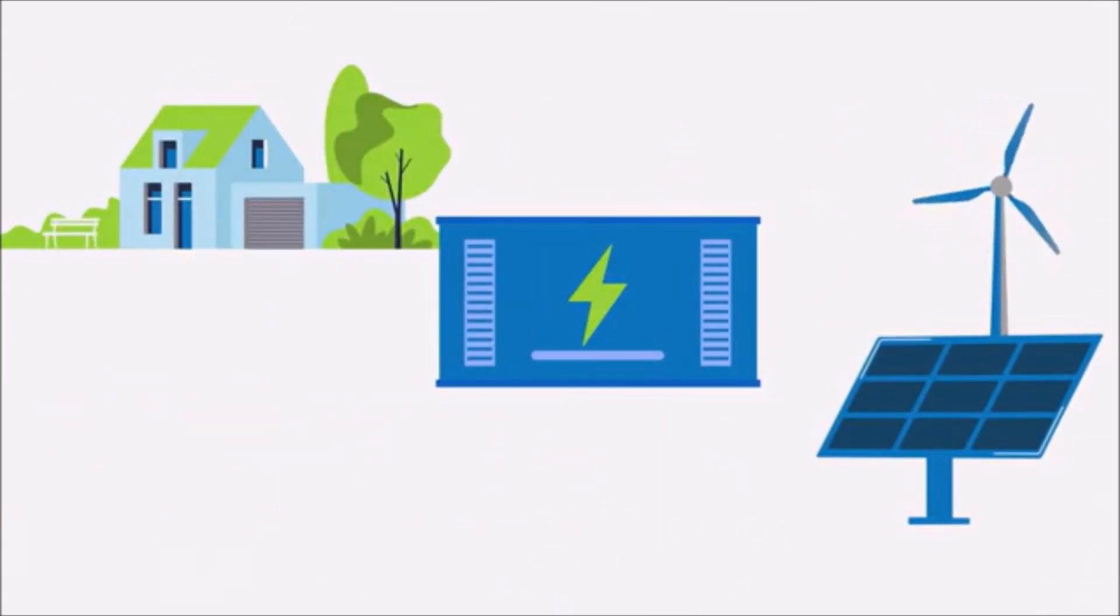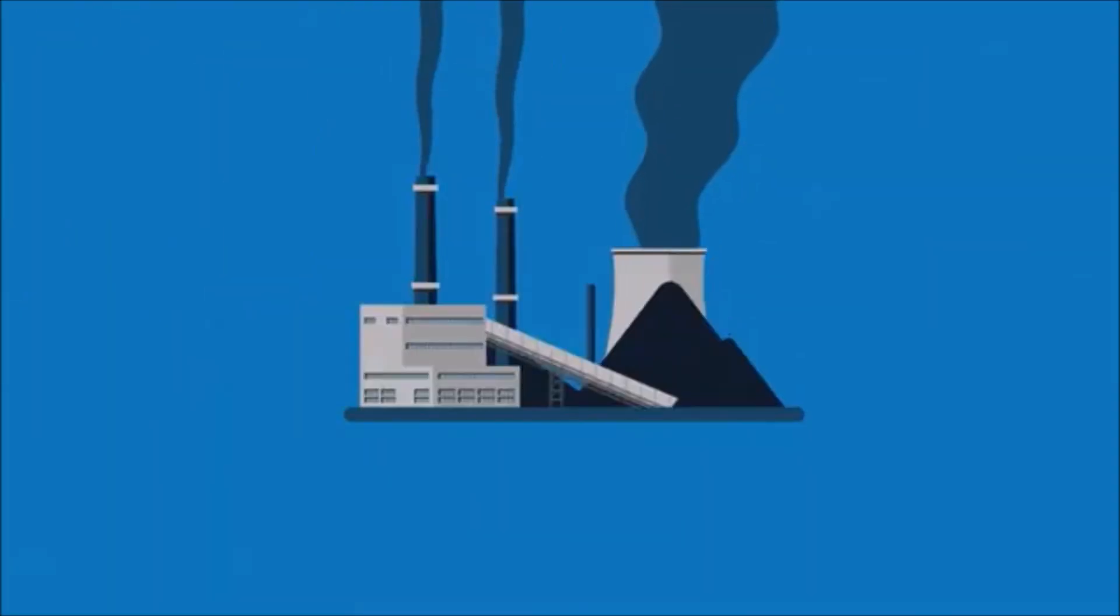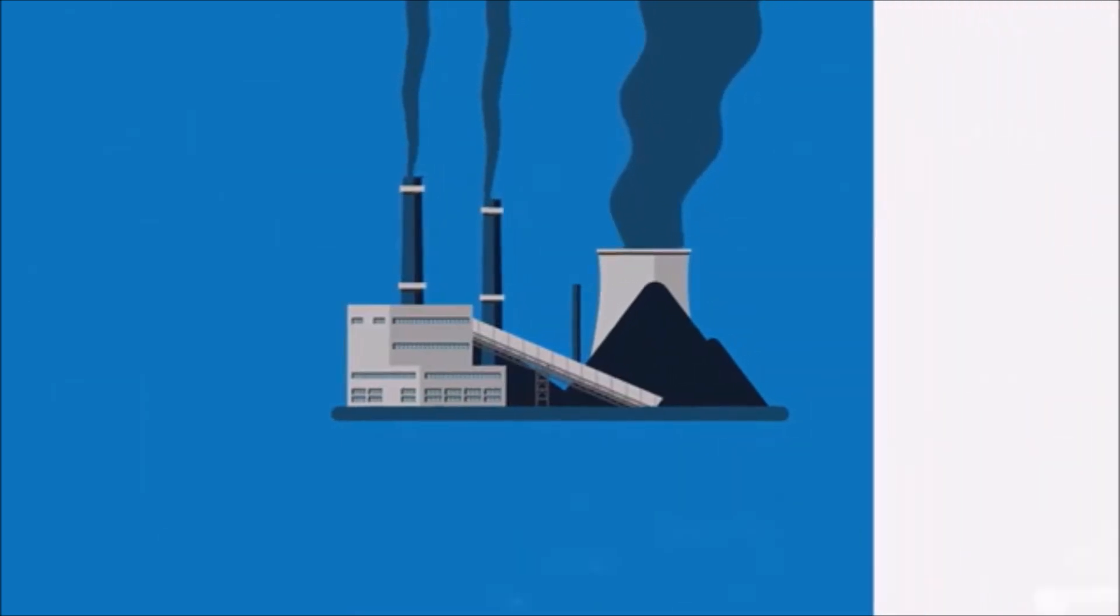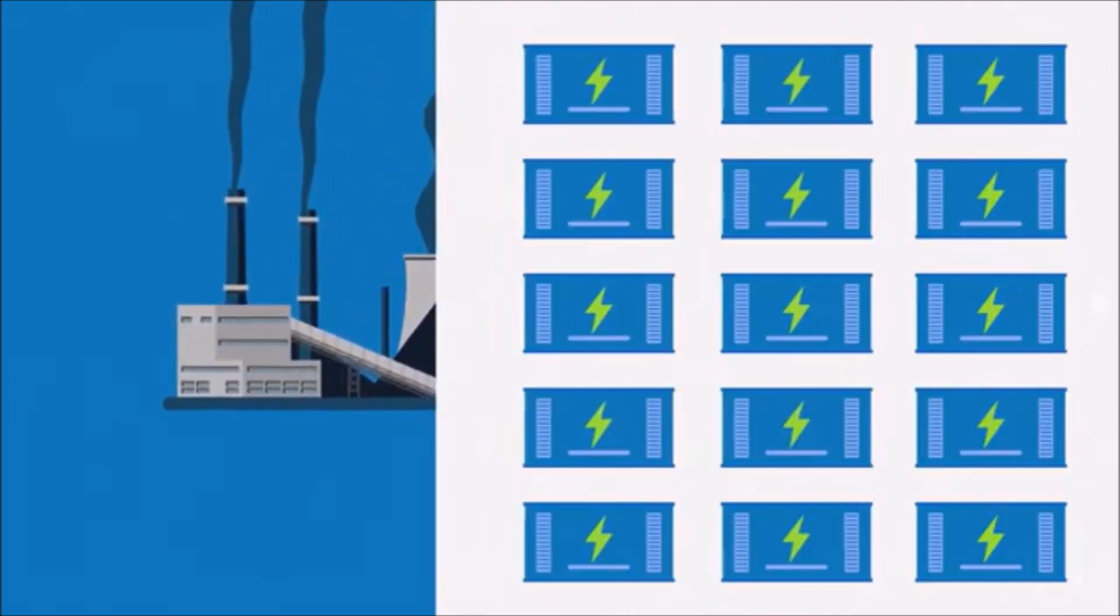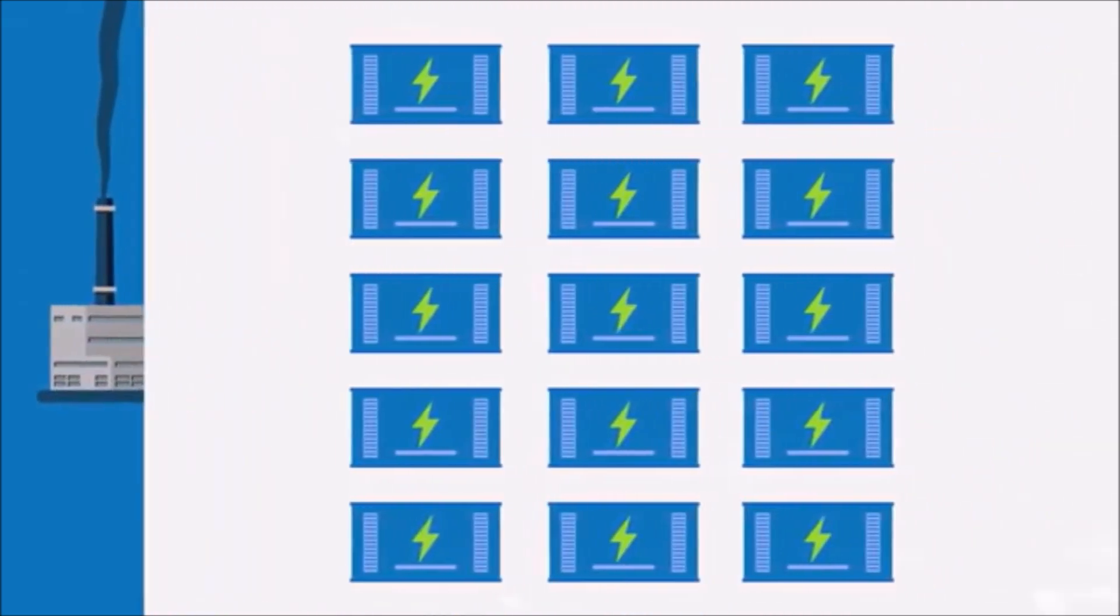Grid scale batteries use computers to decide when to charge up or release energy to the national grid when demand peaks. Up until now, these peaks have been filled in by firing up more fossil fuels or nuclear power stations. As more battery storage is installed alongside continued increases in green generation, there will be less and less need for fossil power.